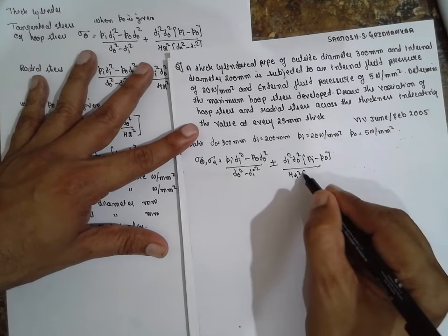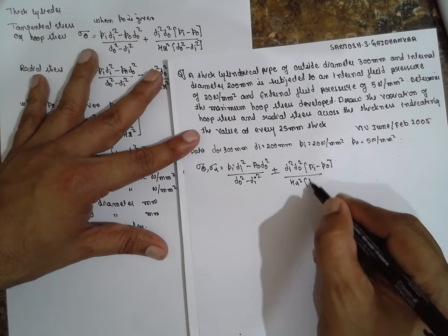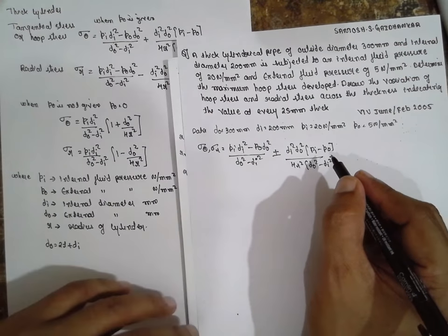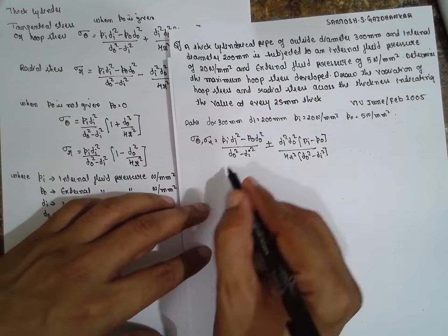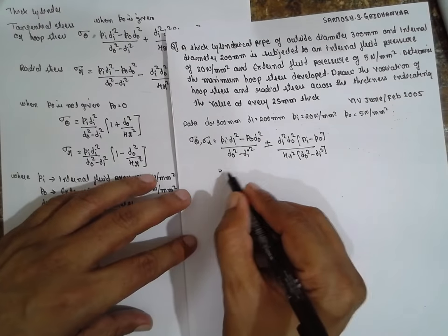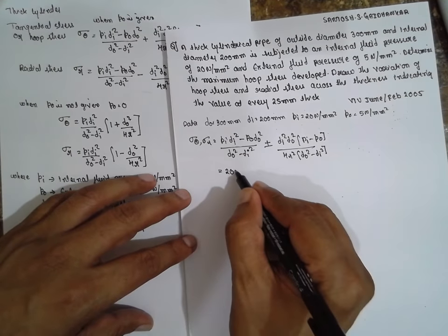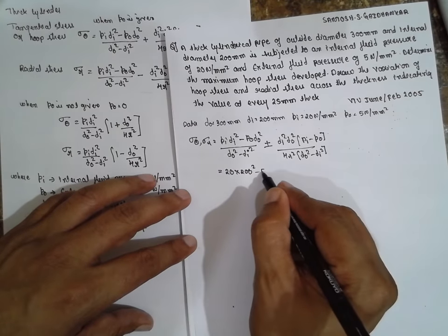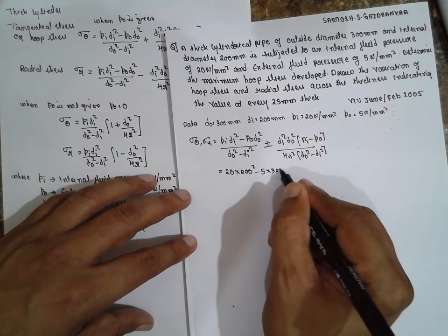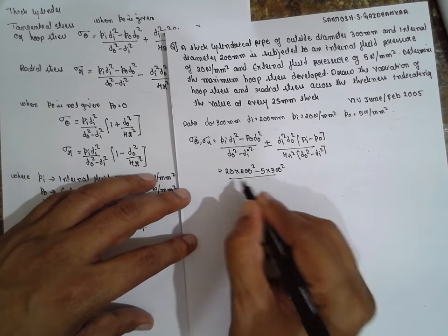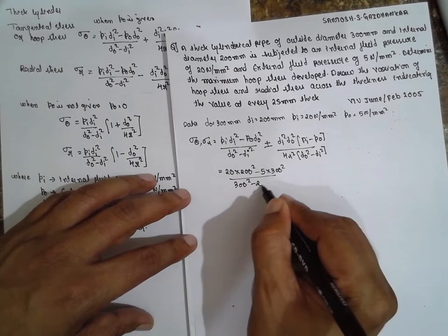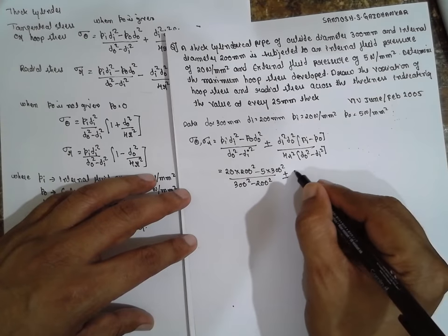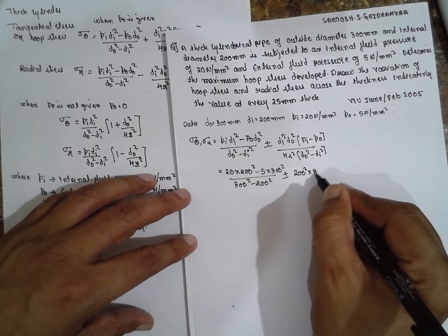Now substitute the values here. I am going to substitute the value: Pᵢ is 20 times 200 square minus 5 into 300 square divided by 300 square minus 200 square, plus or minus 200 square into 300 square divided by D₀ square minus Dᵢ square R square.